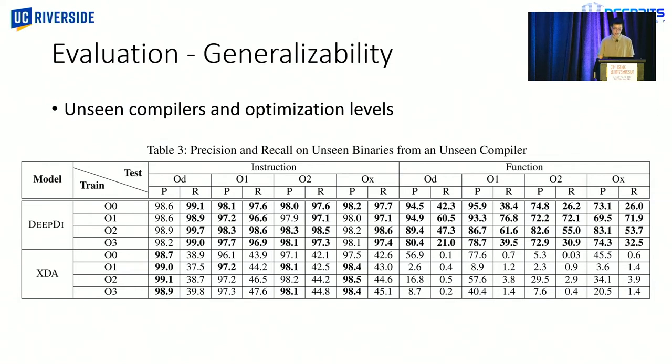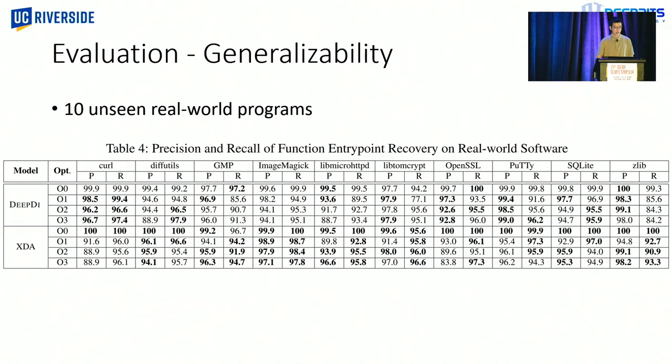And next, we evaluate our generalizability. Here, the training and testing binaries are compiled by different compilers and different optimization levels. And that's how we make sure these binaries are considered unseen to the models. And we compare our approach with another machine learning-based state-of-the-art model, the XDA. And from the table, you can see that we outperform XDA. And there's another generalizability evaluation. So we evaluate the model on 10 unseen real-world programs. And as you can see, our result is on par with XDA's. And those two results suggest that our approach has good generalizability.